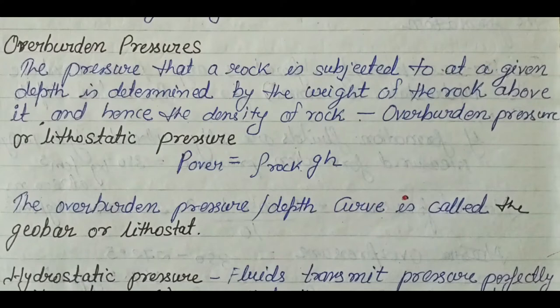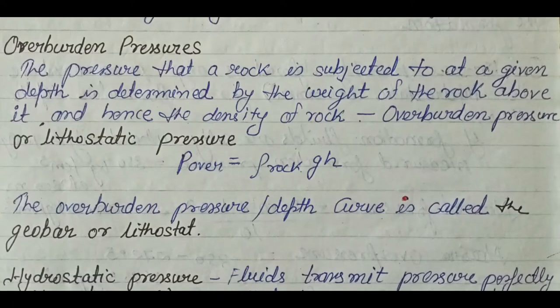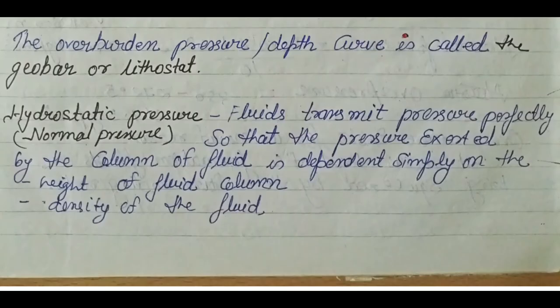Now let's talk about the formation pressure and overburden pressure. The weight of the upper rocks supports the rock below — this is called overburden pressure. The formula is rho × g × h. It is also called geostatic or lithostatic pressure, and the related curve is also known as the geostat or lithostat.